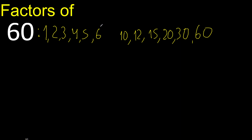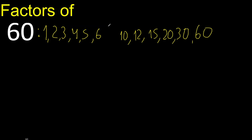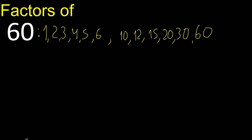Next is 7, but 60 cannot be divided by 7. Next is 8 — cannot be divided by 8. Next is 9 — cannot be divided by 9. Next is 10, but 10 is already listed, therefore we finish finding the factors.